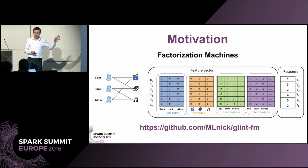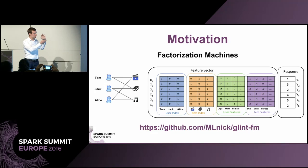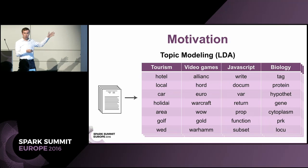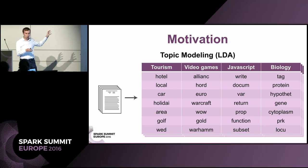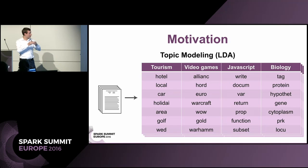Another area is factorization machines. There was actually a talk today by Nick who presented Glint FM, which uses the Glint parameter server to do factorization machines where you try to model feature interactions — also enormous dimensionality. And finally, what I'll mostly focus on in this talk is topic modeling, specifically LDA. In topic modeling you have a collection of documents and try to infer certain topics within them. This can become quite large when you want to infer many topics, since you have parameters of size vocabulary multiplied by the number of topics.